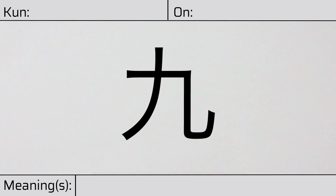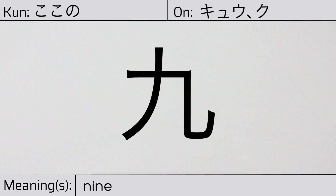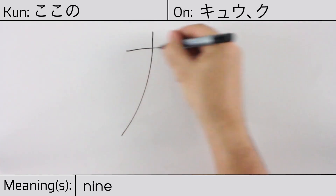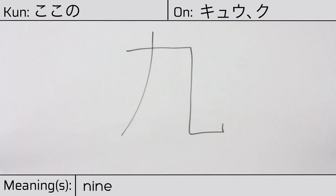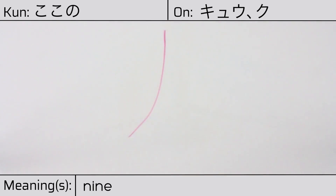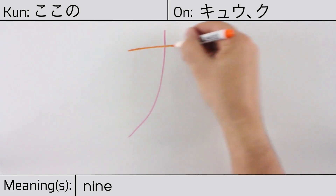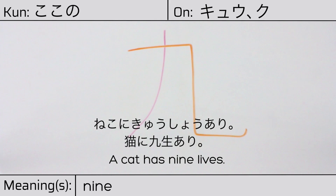This kanji has a kunyomi or Japanese reading of kokono, and it has onyomi or Chinese readings of kyu or ku. This character has the meaning nine. Here is the stroke order. This character is made up of the following radicals or parts: katakana no, followed by the second radical otsu. Our example sentence is: Neko ni kyushou ari — A cat has nine lives.